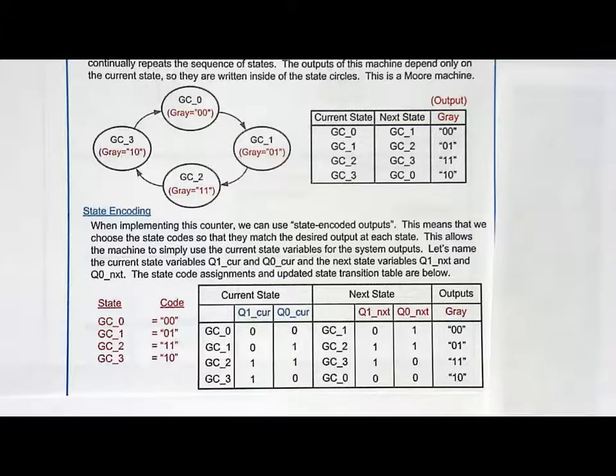However, we now go to synthesize the next state logic. By the way, how many d flip-flops do we need? We need two. You always need one d flip-flop for every bit in the state code. So we still need two bits.